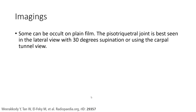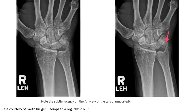The pisotriquetral joint is best seen in lateral view in 30 degree supination or using the carpal tunnel view. In this AP wrist x-ray, we can see the pisiform fracture with a lucency line across it.